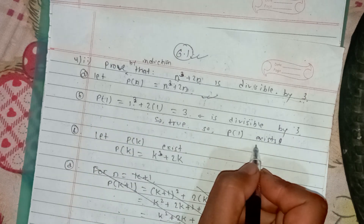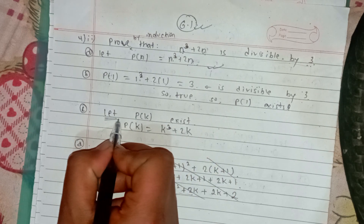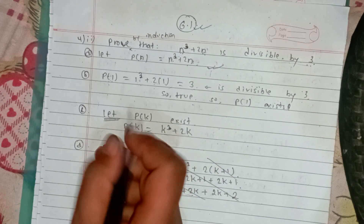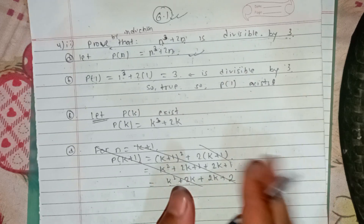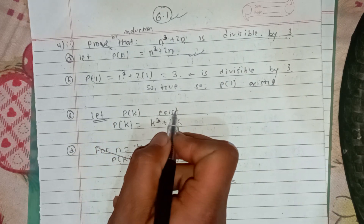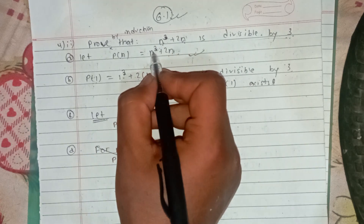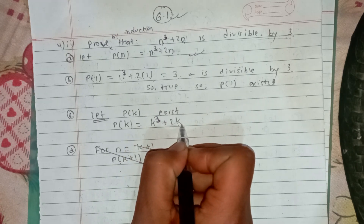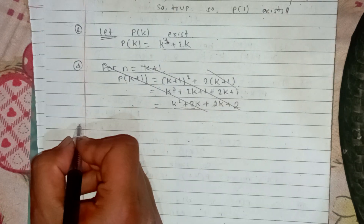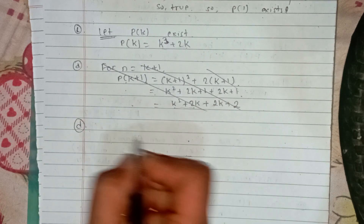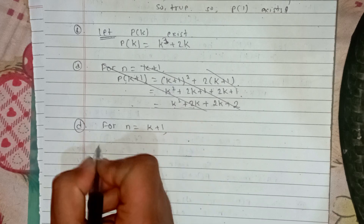If P(1) exists, then we assume P(k) is true. Now, what happens for P(k): k cube plus 2k is divisible by 3. Now, we need to show that k plus 1 exists — that is, P(k+1) also holds.